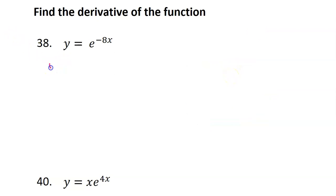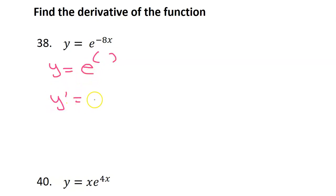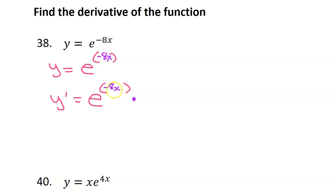So mostly, you just have to watch out for the chain rule. So here we have another function inside the exponential function. The outer function is this, and the derivative of this is itself. But we have some stuff on the inside — this negative 8x, this inner function — and when there is an inner function, according to the chain rule, you have to multiply by the derivative of that, which is just negative 8.